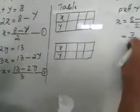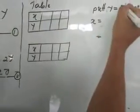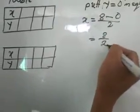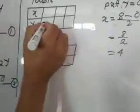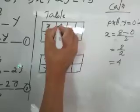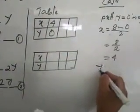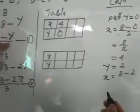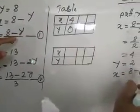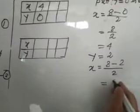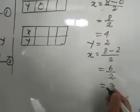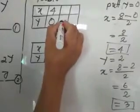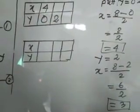So taking Y equal to 1 is wrong. The right value: let's take Y equal to 0. So 8 minus 0 is 8. Then 8 divided by 2 is 4. When we take Y as 0, X is 4. Next, let's take Y equal to 2. X equal to 8 minus 2 is 6. 6 divided by 2 is 3. When we take Y as 2, X is 3.